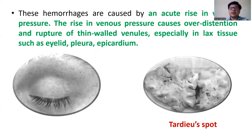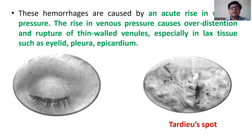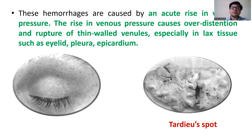These hemorrhages are caused by acute rise in pulmonary blood pressure. The rise in venous pressure causes overdistension and rupture of thin-walled venules, especially in lax tissue such as eyelid, pleura, and epicardium.